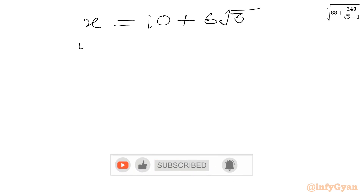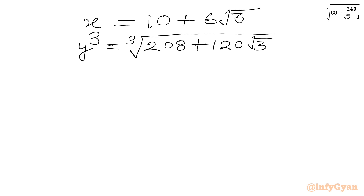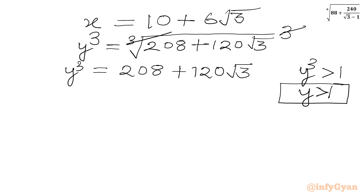Now we have to calculate y, where y = ∛(208 + 120√3). Cubing both sides, the cube root and cube cancel, giving y³ = 208 + 120√3. Since this is greater than 1, for real y we must have y > 1. Let us consider z where z³ is the conjugate: z³ = 208 − 120√3.